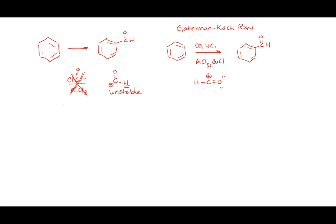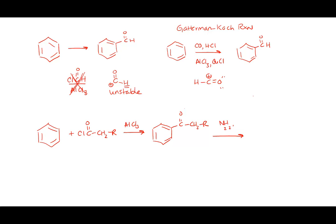If you want to add a straight-chained alkyl group to the benzene ring, we cannot do that in one step. You have to use aluminum trichloride and an acid chloride, making the phenyl ketone first. Then you use either N2H4, KOH, and heat — that's the Wolff-Kishner — or zinc and mercury with HCl and heat — that's the Clemmensen.